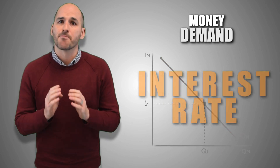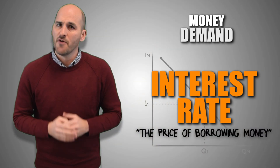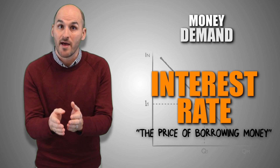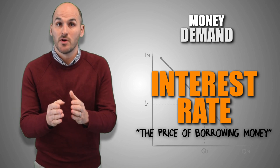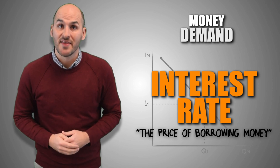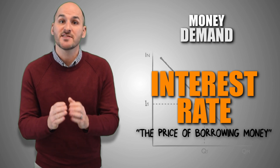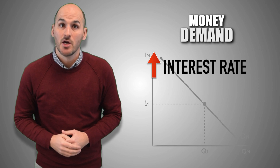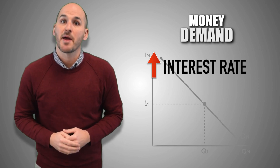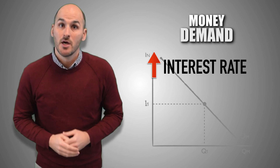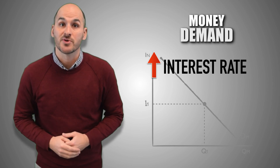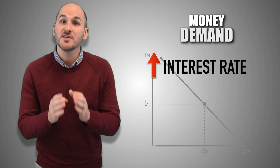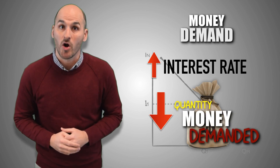Remember that the interest rate is the price of borrowing money. If a consumer is going to borrow or use money to make purchases, the consumer must pay a price to acquire that money needed to complete the purchase. Consumers and those who borrow money in the aggregate economy consider the price of money before borrowing it. If nominal interest rates rise, consumers and borrowers will have to pay more to banks and other lenders to borrow their money, and will use less to avoid paying higher interest.